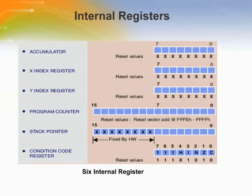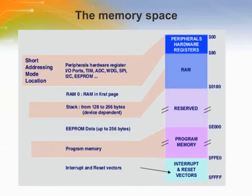The reset value of the I bit of the condition code register is 1. The memory stores both the program and data. The ST7 memory is linear with no pagination, so up to 64 kilobytes can be addressed. RAM 0 and hardware registers are addressed using short addressing modes — the address is coded in only one byte instead of two. All data located in zero page, RAM 0, have faster access and generate less code when accessed than data located in other locations.